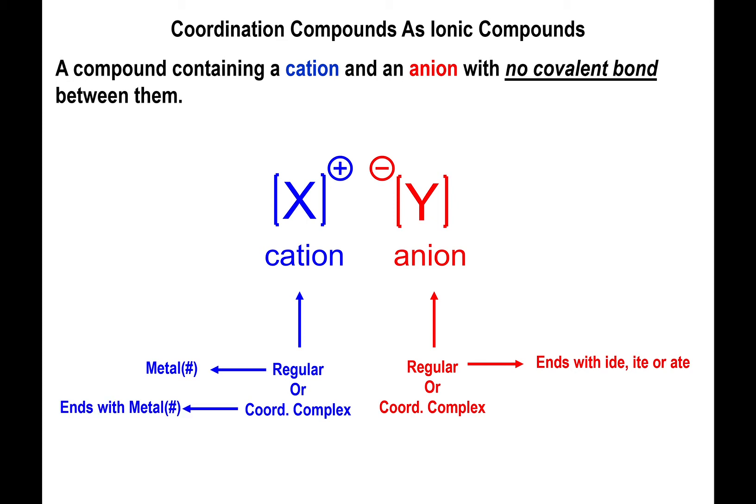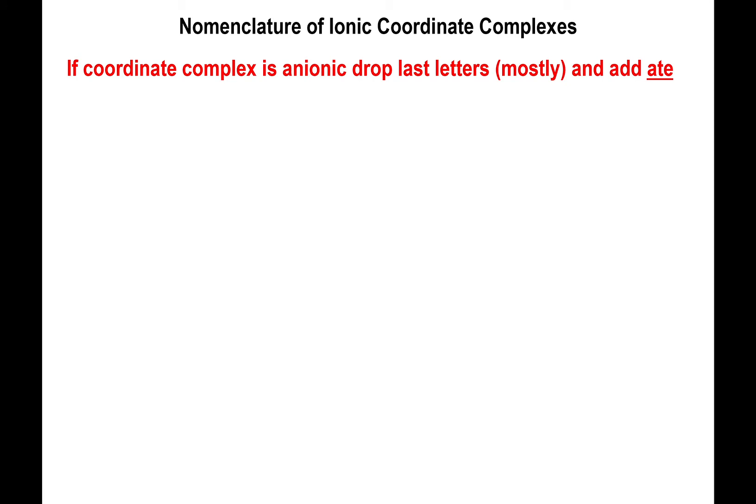If you do have a coordination complex, you will have to name all of the ligands along with the metal and the charge of the metal. If the coordination complex is part of the anion, then you will have to name the complex alphabetically with the ligands followed by the name of the metal, but you have to introduce the suffix -ate to the metal to emphasize that the metal complex is part of an anionic complex.